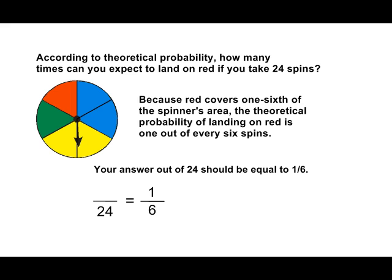The only number out of 24 that is equivalent to one-sixth is four out of 24. If you take four out of 24 and reduce it into simplest form, that would equal one-sixth.